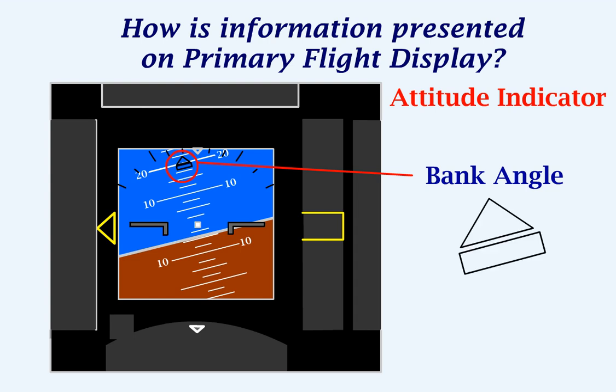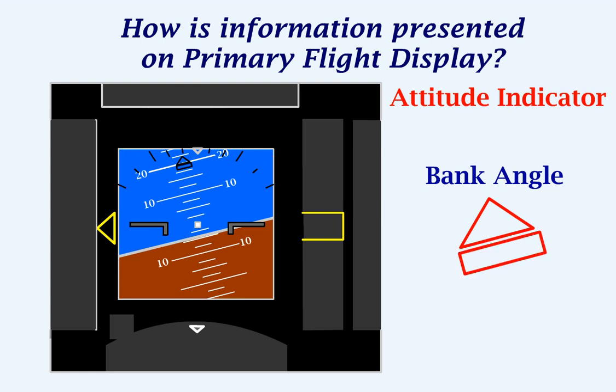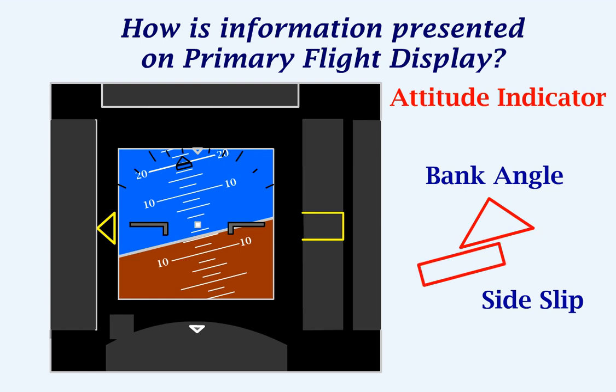If we look at this symbol in detail, this triangle points towards the bank angle on the scale. The trapezoid below it represents the aircraft's sideslip. This means that the aircraft is sideslipping towards the right. This means that the aircraft is sideslipping towards the left.